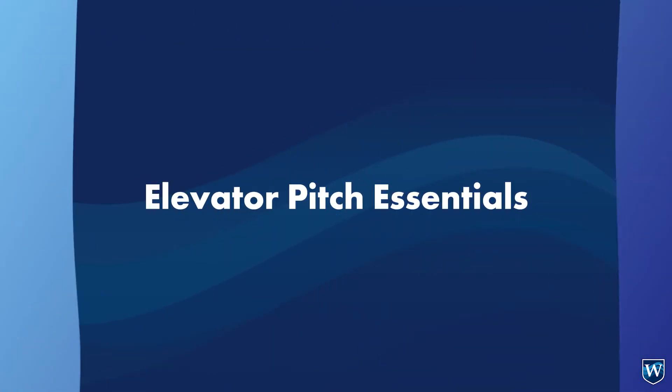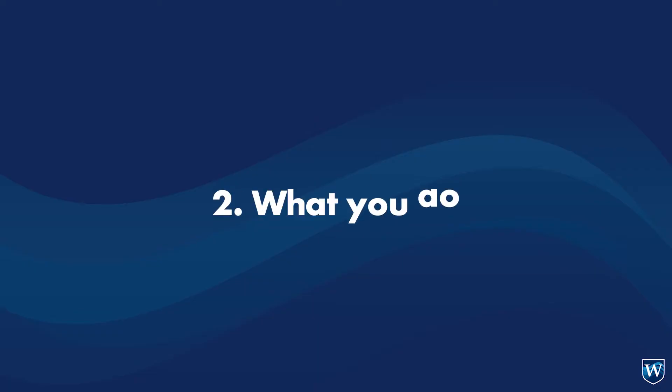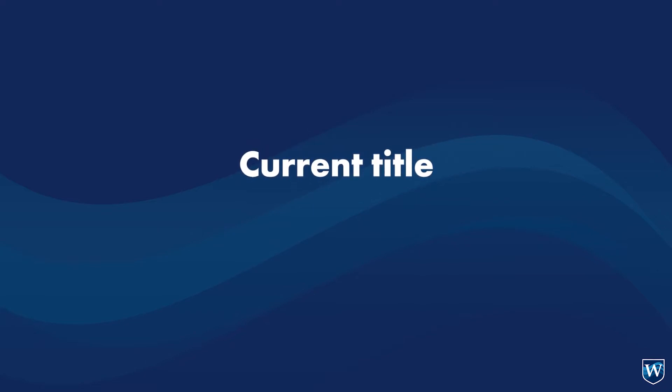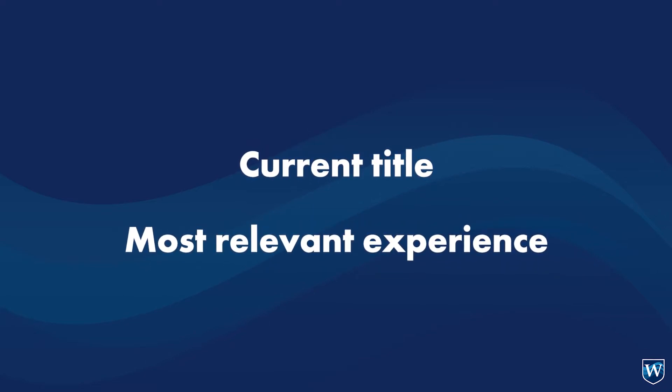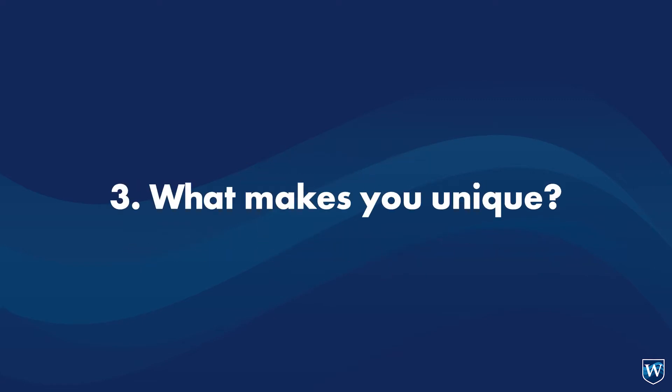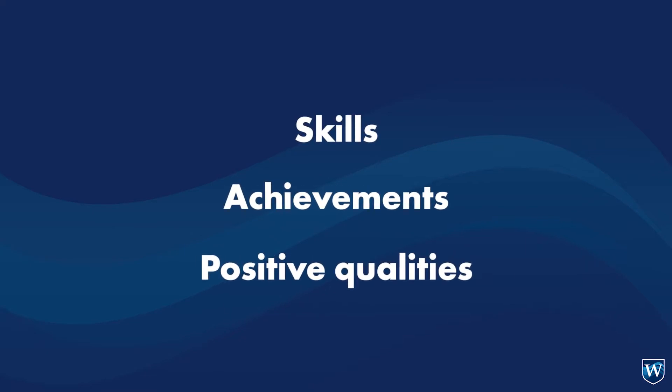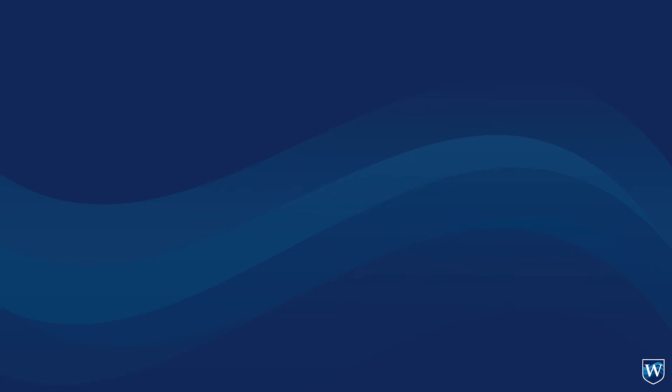Let's discuss the elevator pitch essentials. The first part is the introduction, where you share who you are — your name and what program you are studying. This is closely tied with explaining what you do, which is where you share your current title or most relevant professional experience. The third section is what makes you unique — your skills, achievements, and accomplishments. The fourth section is your career goals, and the final section is the call to action, where you ask your audience how they can help you.